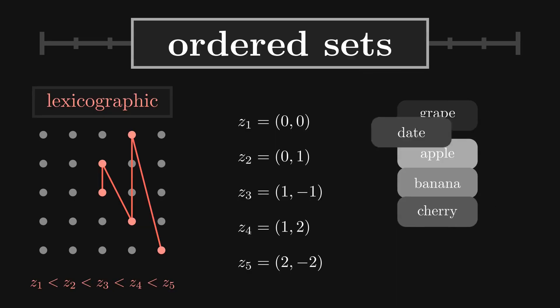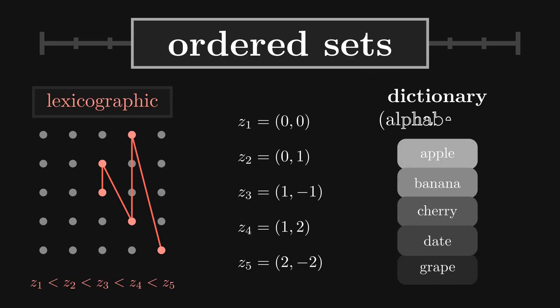We start by comparing the first letters of two words, and if they're the same, we move to the second letter and so on until we find a difference. This order can be extended to sequences of elements like pairs, and can be applied to 2D lattices or more complex structures.